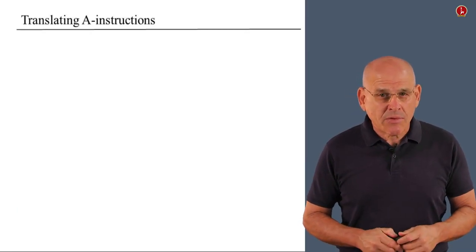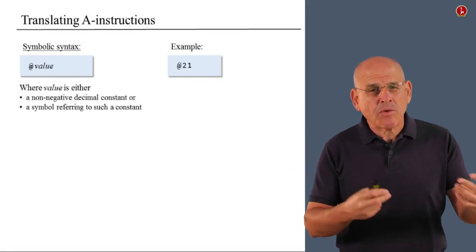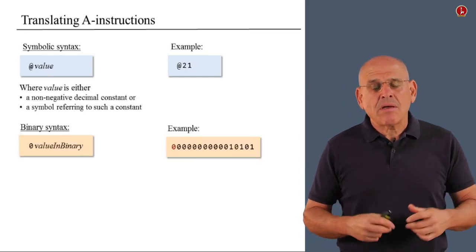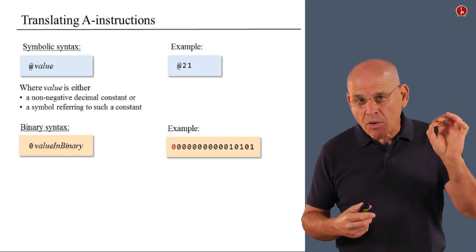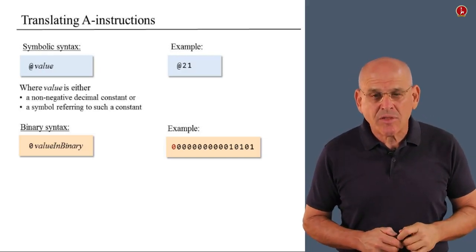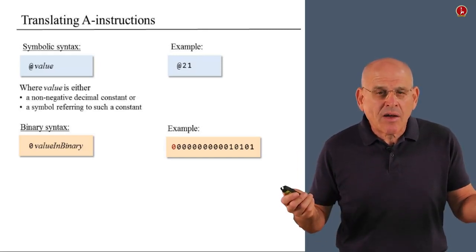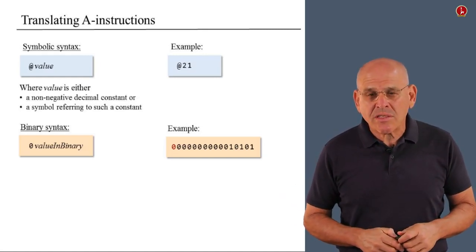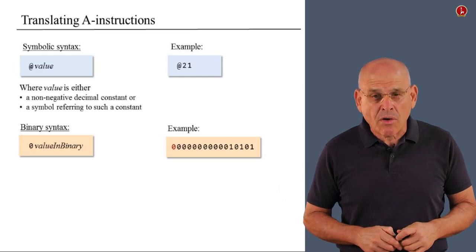So, let us begin with A instructions. Here is the general rule and the syntax rule of how to put together an A instruction and an example, and here is the same instruction expressed in binary code. Notice that the op code of an A instruction is zero. This is the first red zero bit that you see in the example at the bottom right. By the way, the colors are completely meaningless and I use them only to improve our communications.